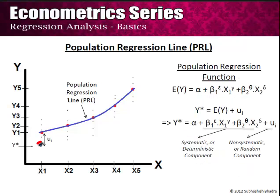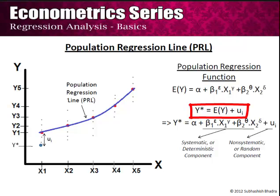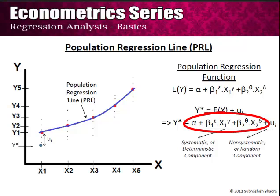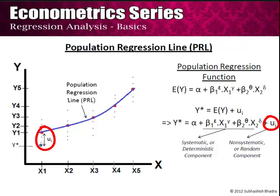Hence, between every value of Y at X1 and the mean of Y at that X1, there is a non-systematic or random component known as ui. To make our population regression function more robust we must include this ui. So Y* equals the expected value of Y plus ui. In our case, when we consider this blue dot, ui is negative because Y* is less than the expected value of Y at X1. Hence any population regression function consists of two parts: the first is a systematic or deterministic component giving us the expected value of Y at X1, and the second is a non-systematic or random component giving us the difference between that expected value and the real Y.